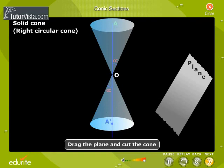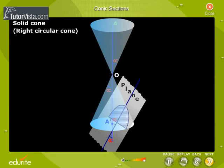Drag the plane and cut the cone. Click on the button. The sectional view shows a parabola whose axis is inclined at an angle alpha to a a dash.